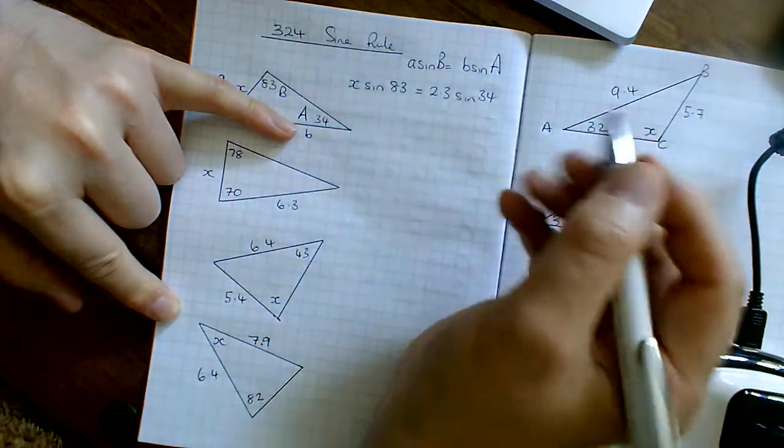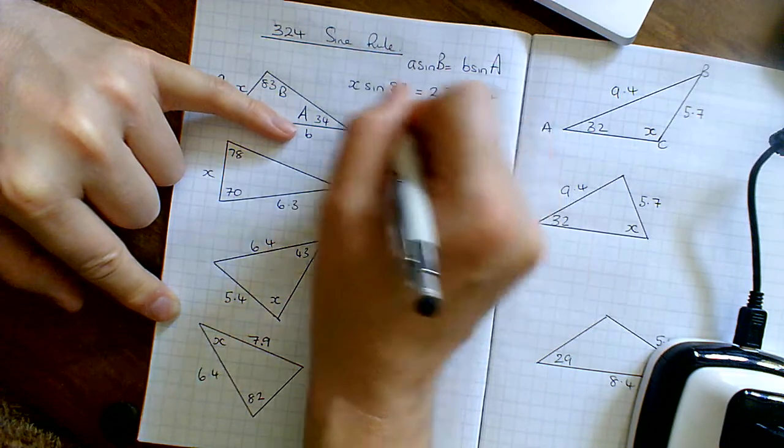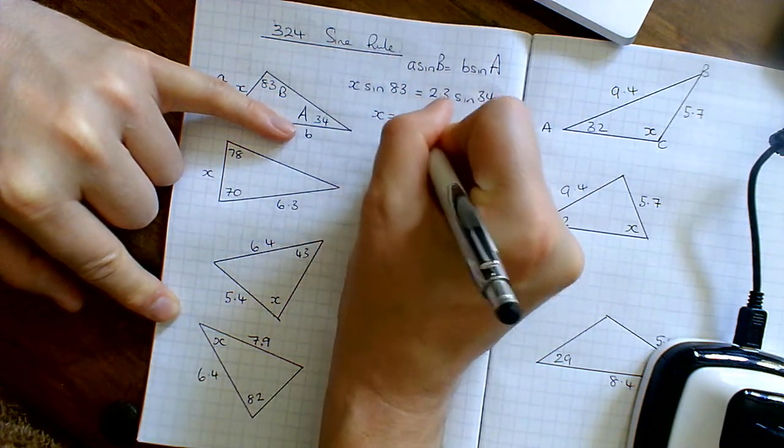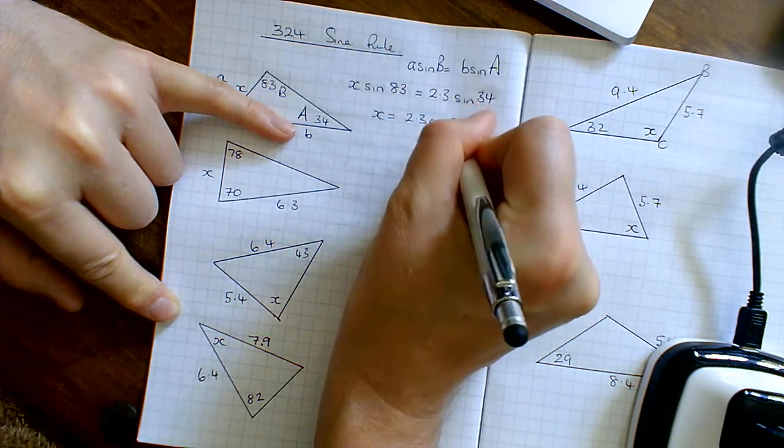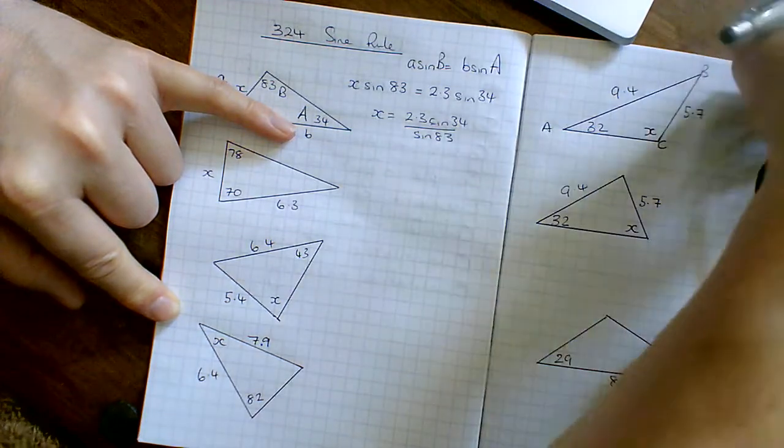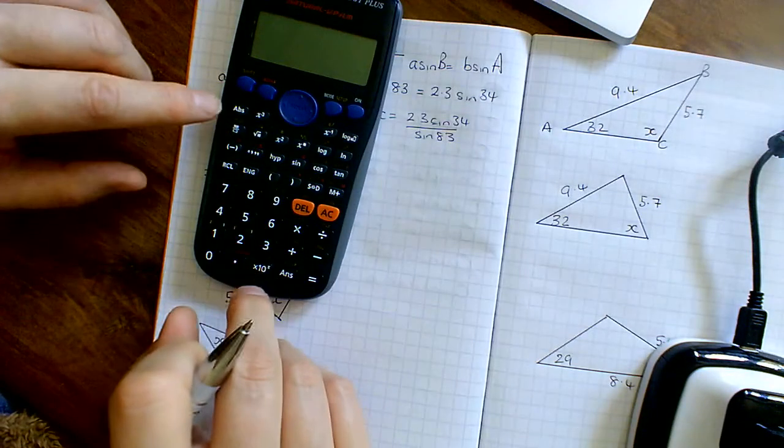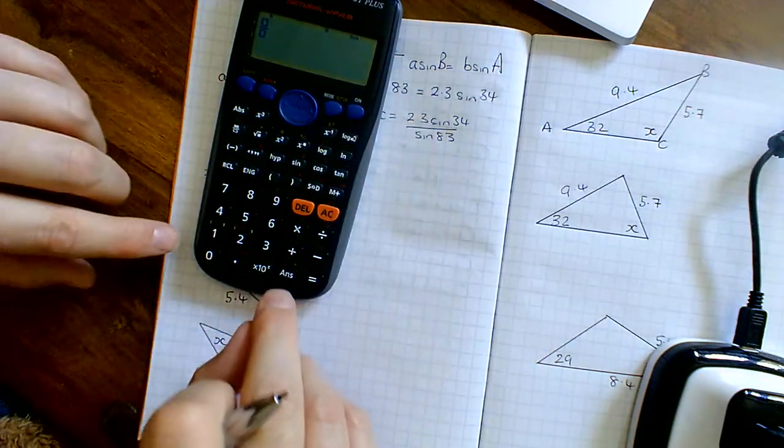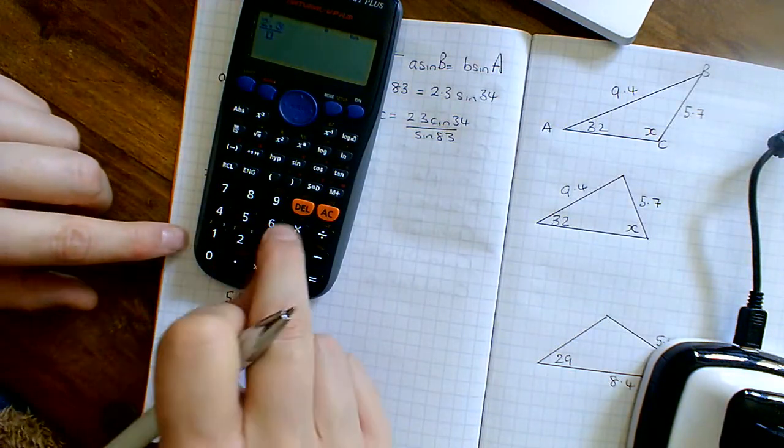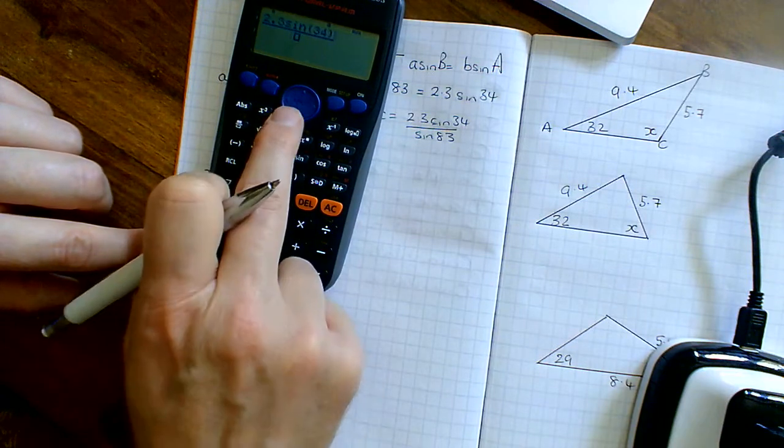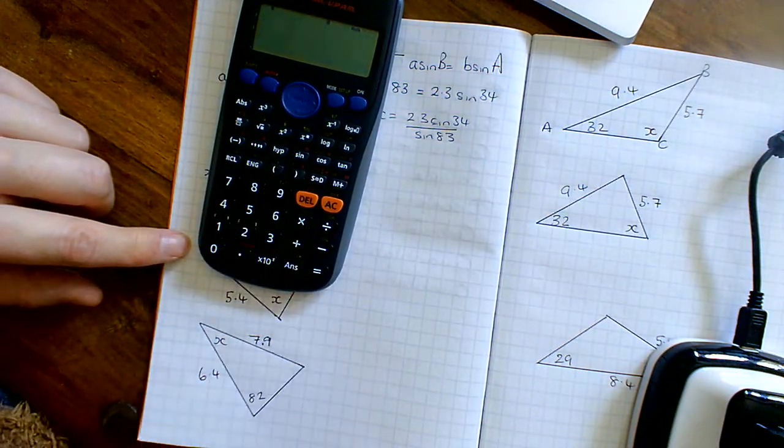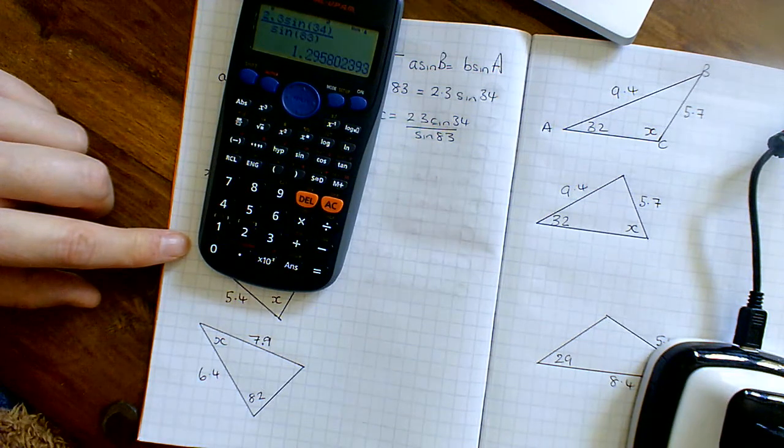All I've got to do to find what X is, is just work this out and then divide it by this thing because this is X times it. So I've got X equals 12.3 sine 34 divided by sine of 83. I'm going to get my calculator and put a fraction on. Check it's in degrees because it has to be in degrees. 12.3 sine 34, close the bracket, over the sine of 83.